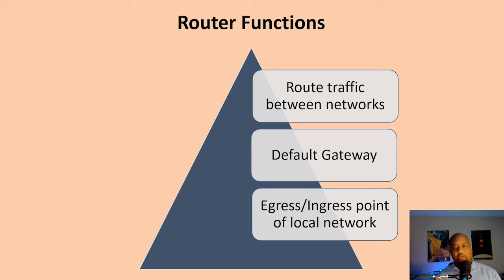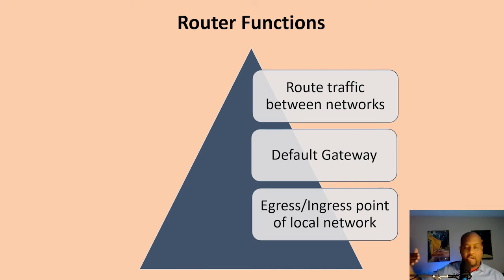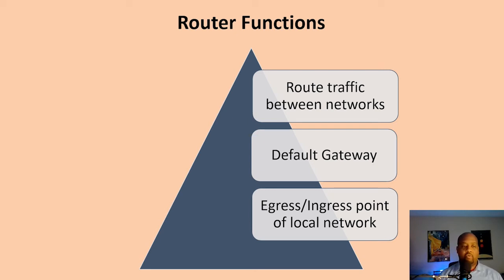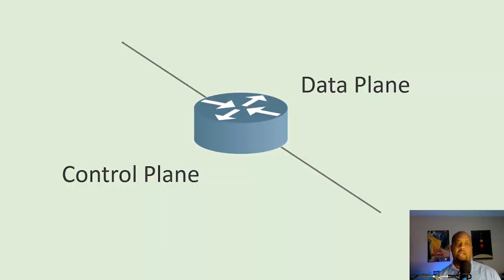The router can also be thought of as the ingress or egress point into the local network — the demarcation point between your internal network and the outside. There can be additional devices that play this role as well, like a firewall, but the router is that ingress/egress point from your local area network.